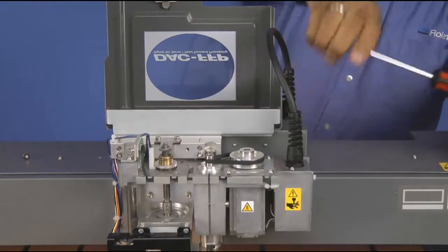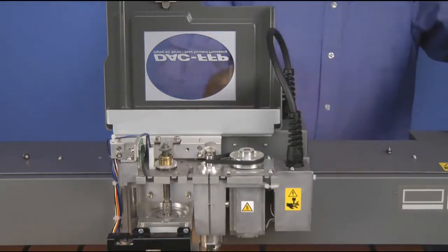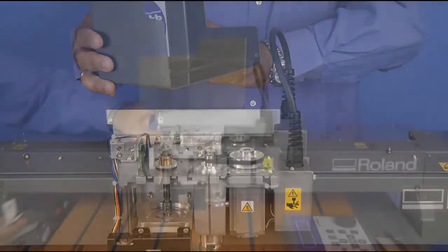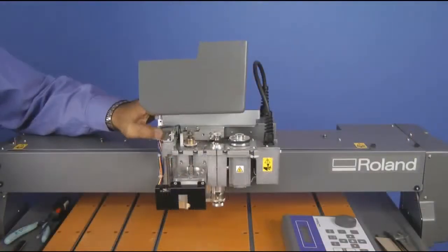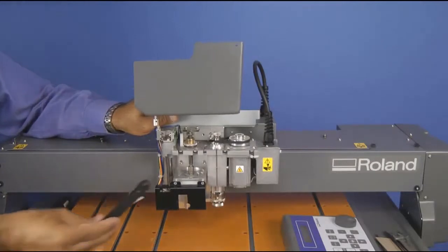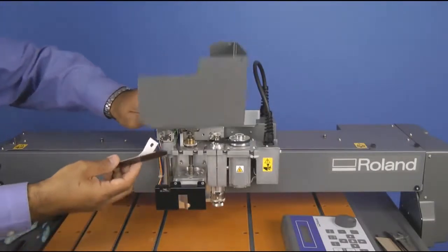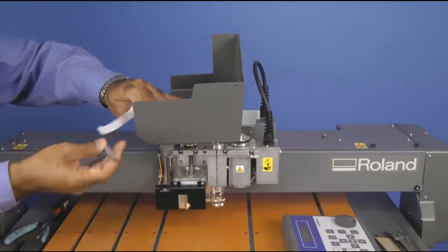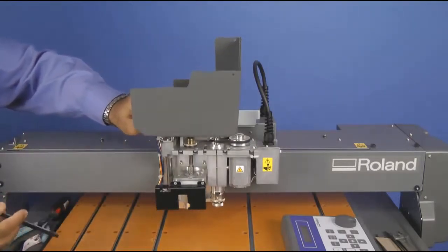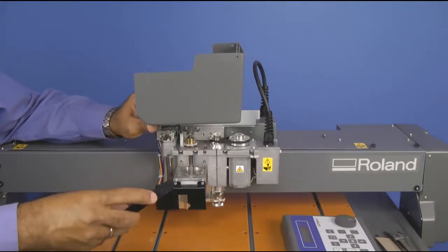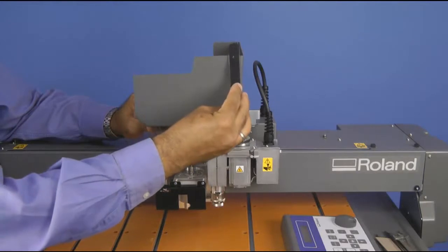Next, we will take the cover extenders and peel off the backer. These extenders have a double-sided adhesive applied to them. What we want to do is line up the bottom hole with the hole on the cover.